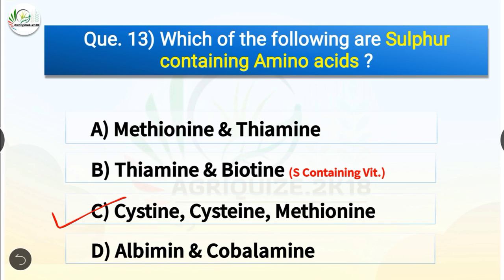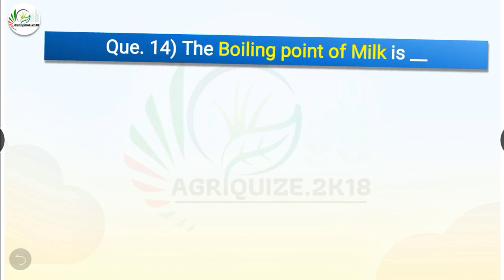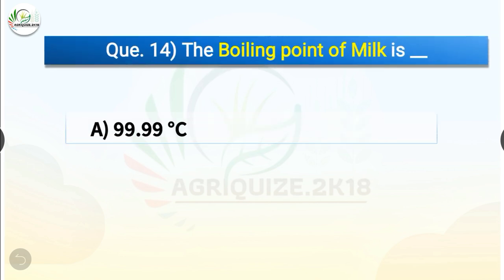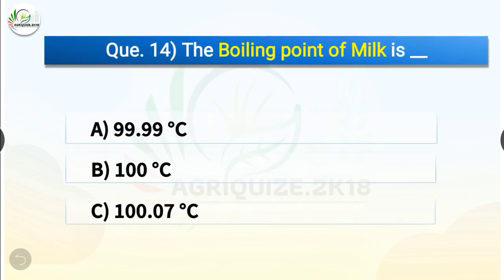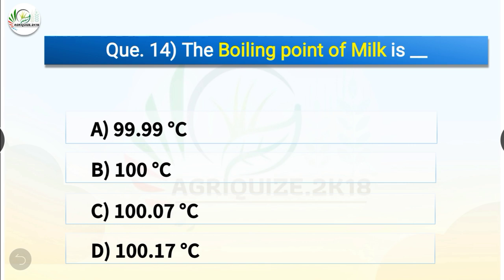Question number 14. The boiling point of milk is dash. The options are 99.99°C, 100°C, 100.07°C or 100.17°C. The correct answer is option D, 100.17 degrees Celsius.